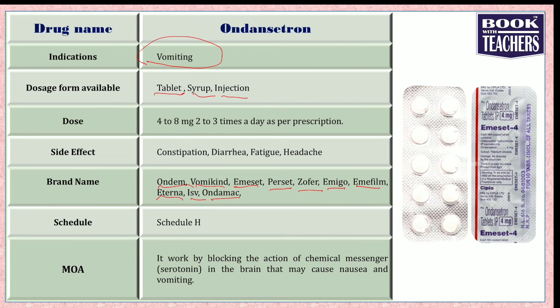Now we will see the mechanism of action — how it works. It works by blocking the action of serotonin in the brain. By blocking serotonin, ondansetron shuts down the chemoreceptor trigger zone, also called the CTZ, which is responsible for the nausea reflex, and this ultimately stops nausea and vomiting. Please don't get confused with motion sickness drugs. Thank you.